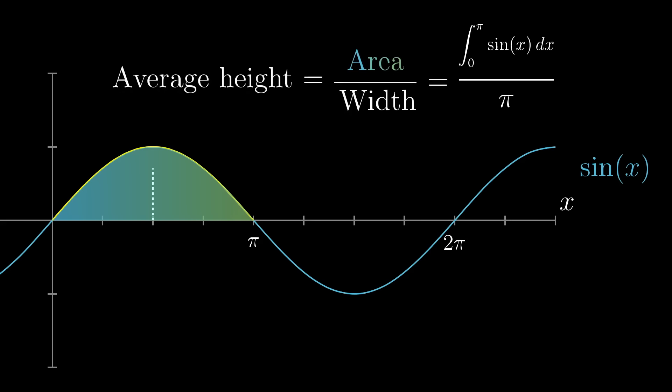In other words, the average height of this graph is this area divided by its width. On an intuitive level, and just thinking in terms of units, that feels pretty reasonable, doesn't it? Area divided by width gives you an average height.